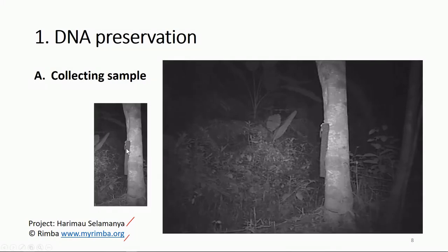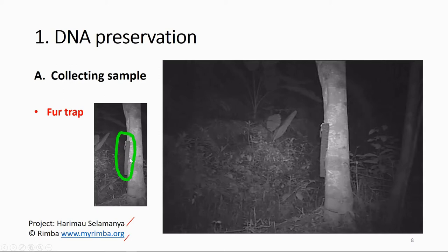This video shows a project called 'Harimau Malaya' conducted by RIMBA. What you see on the tree is a fur trap. They put pheromone on the trap, and when the tiger scratches its body on the tree, the hair gets trapped on this device. Hopefully, when the hair is detached from the animal, there is a follicle attached where you can get cells, and from those cells you can get the DNA of the tiger — without tracking or having any direct contact with the tiger.